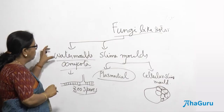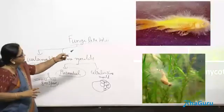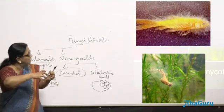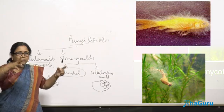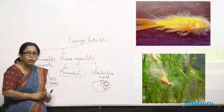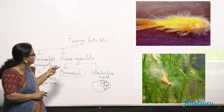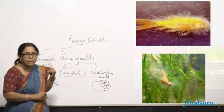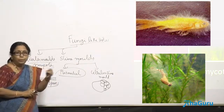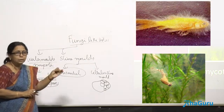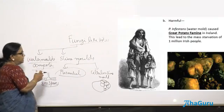These water molds live on dead fish — the dead fish looks as if it has some kind of cotton growing on it, and that cotton is nothing but the water mold. One organism belonging to this group is called Saprolegnia. Saprolegnia is a saprophyte — it just feeds on dead organisms.